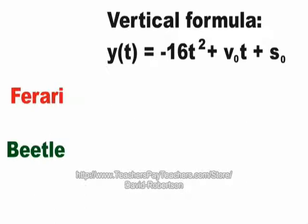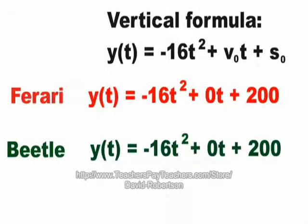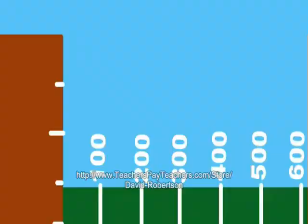This is the vertical formula. Same letters, except s sub-zero means the vertical head start. Negative 16 is just the force of gravity here on Earth. There's 150 you see for the velocity of the Ferrari, and 200 was the initial head start vertically that the Ferrari got, because it was on the 200-foot cliff. The same thing for the Beetle, 60 was its velocity.